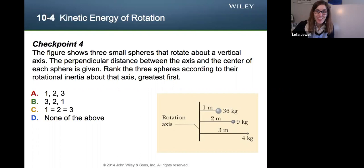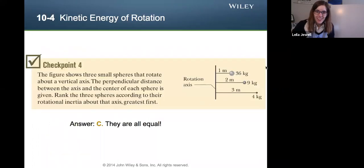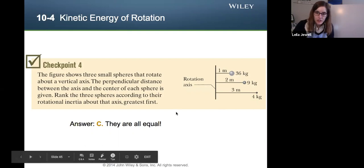Okay. Hopefully you did that. Now let's check it out. So it is C. They are all equal. Why is that? Well, this is a case where we have finite particles that are rotating about the rotation axis. So if we want to calculate their rotational inertia, oh, let me get off this yellow.